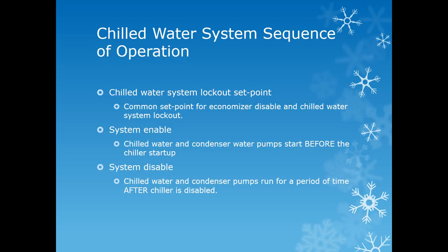Whenever a chilled water system is enabled, the pumps will always start before the chiller. It is very important that those pumps are up and moving water through the machine before the machine itself is enabled. When the system is disabled, the chilled water pumps are shut down last. We must maintain flow through that machine for a period of time prior to the entire system being turned down, because if you let the water get too cold in that chiller it can damage the machine.